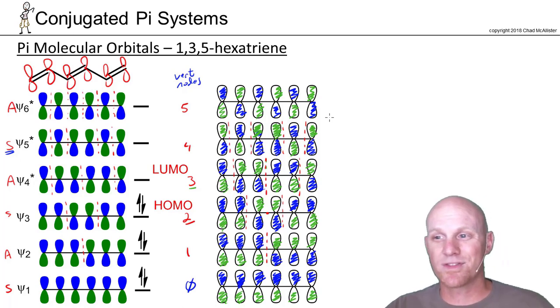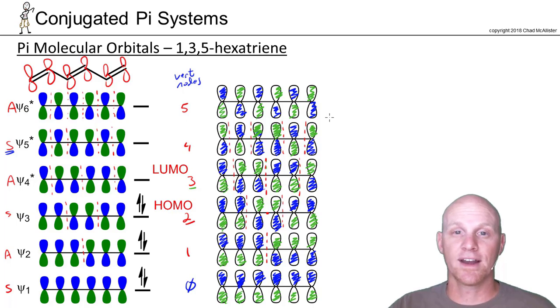There are the six molecular orbitals for 1,3,5-hexatriene, and again, odds are you probably got to know how to draw any one or all of the six on your exam.